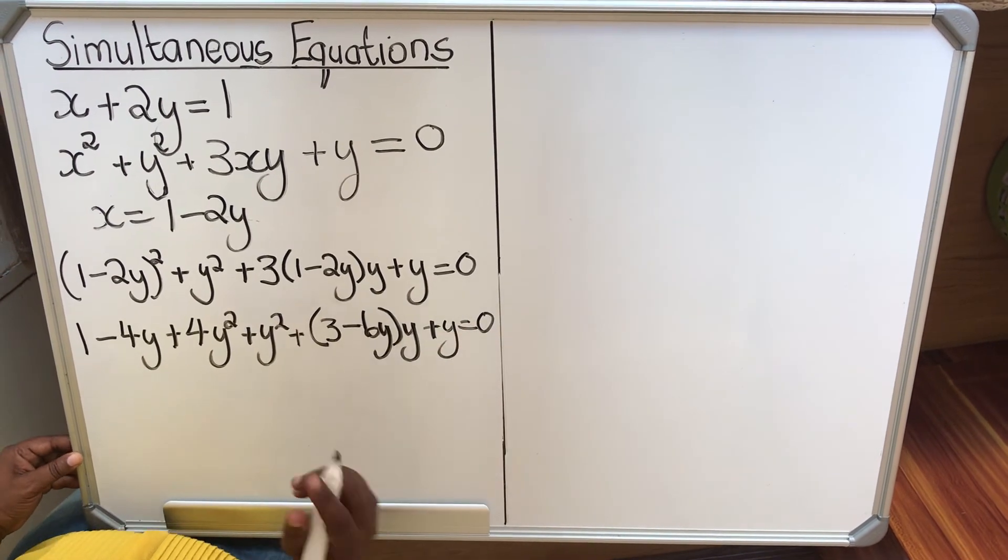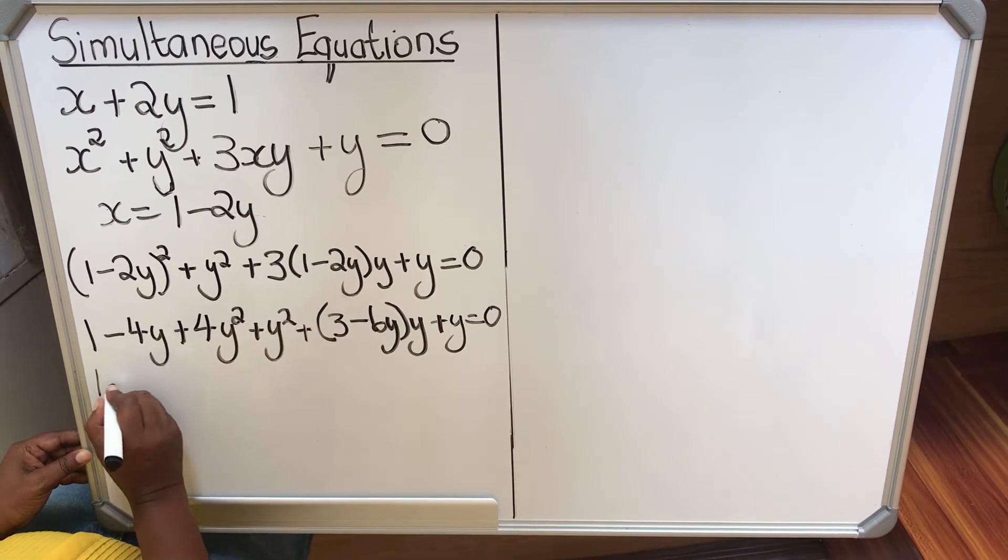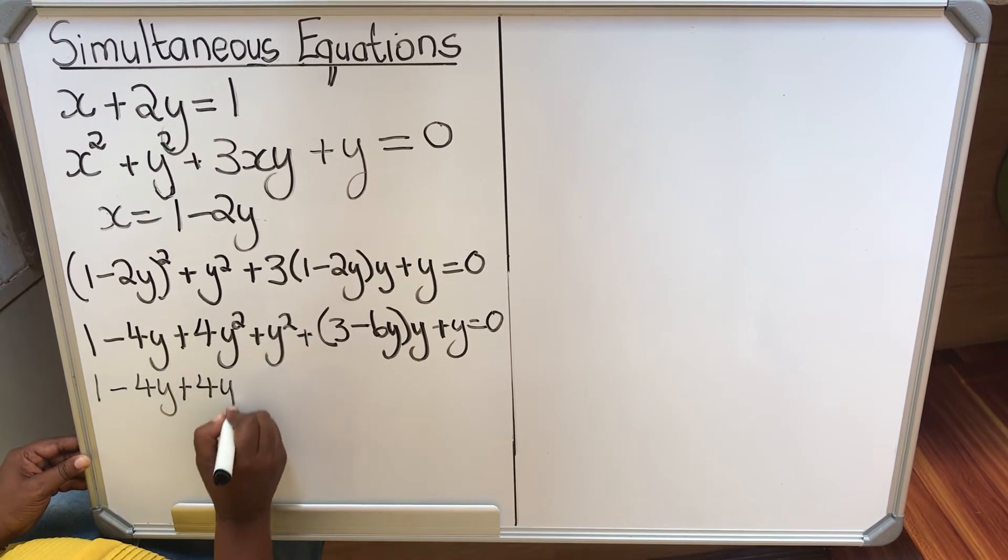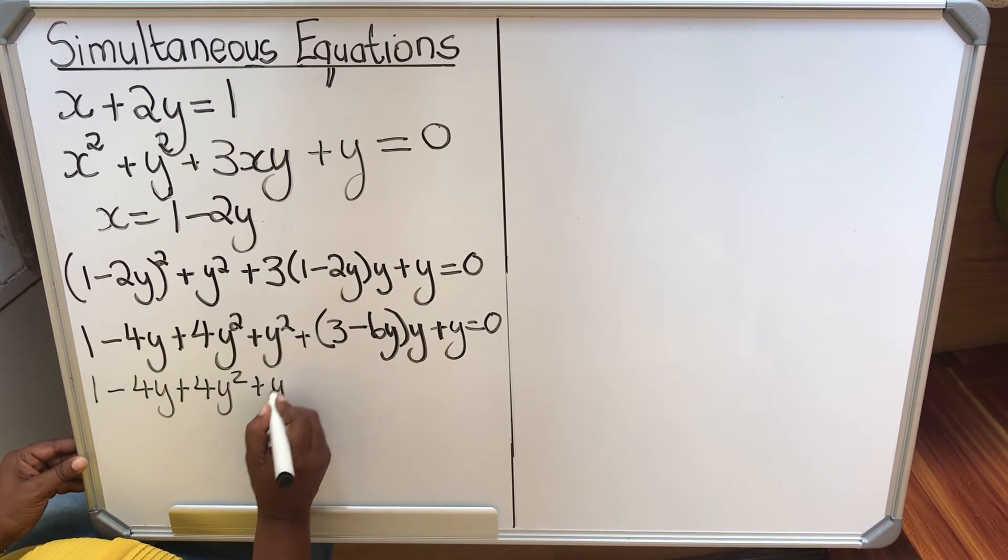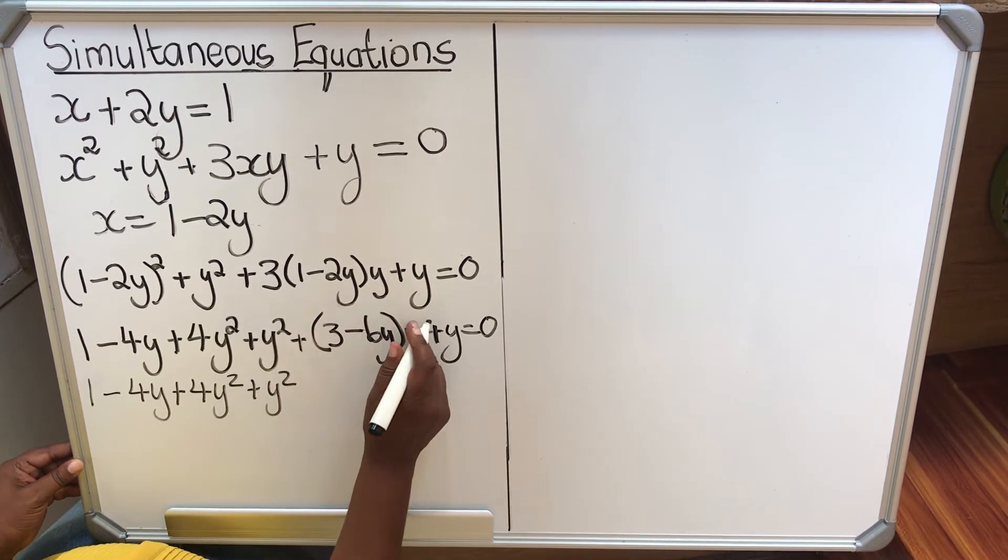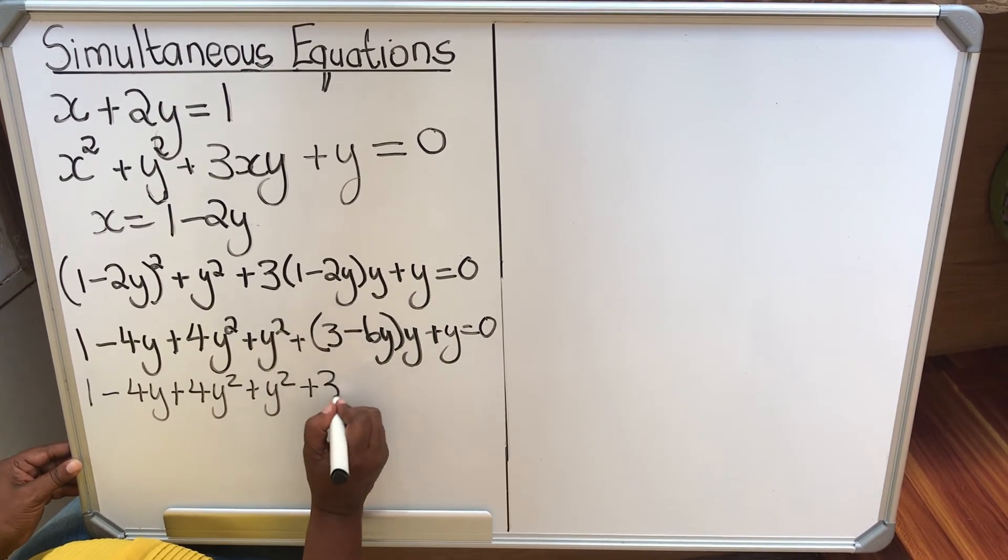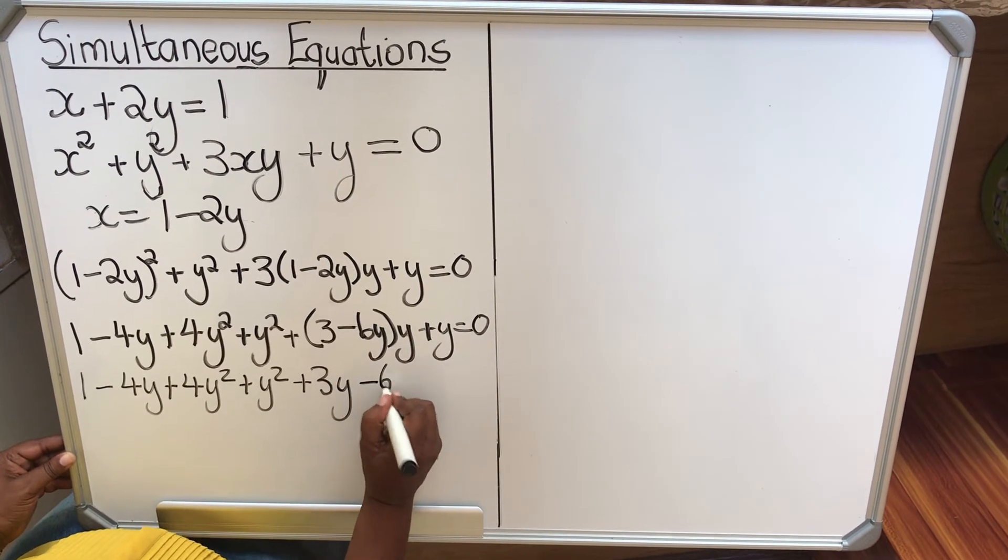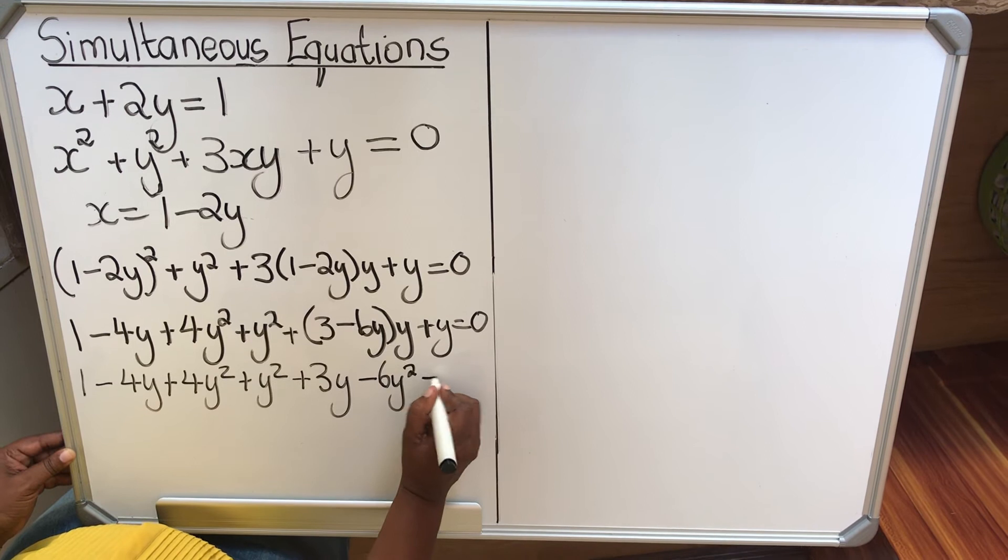Then we're going to multiply with a y next. 1 minus 4y plus 4y squared plus y squared. Then y times 3, I'm going to get 3y. Then y times minus 6y, I get minus 6y squared. Then plus y.